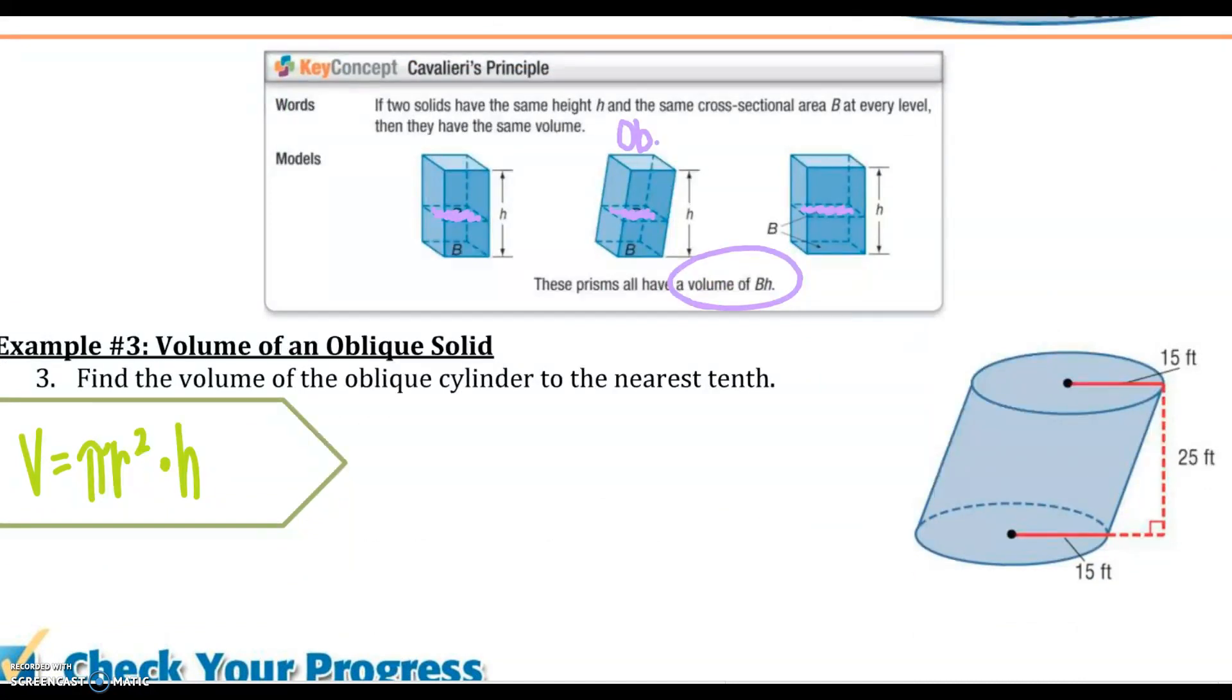This is an oblique cylinder, but we can still find the volume the same way we would. I'm going to put that in my calculator, only squaring 15. I get 5,625 pi feet cubed, which is approximately 17,671.5 feet cubed.